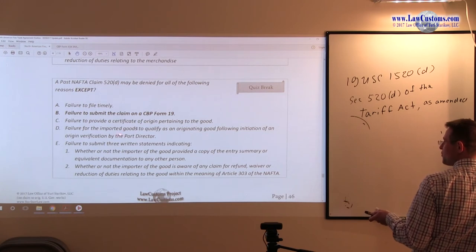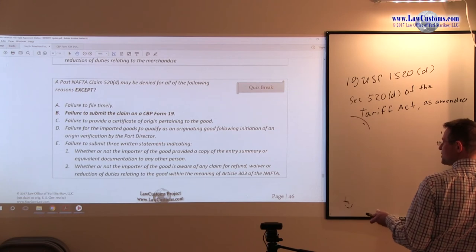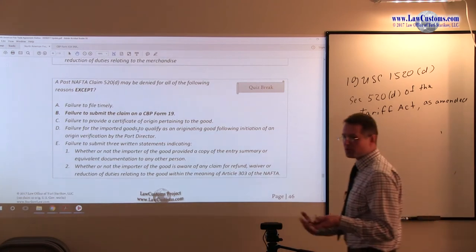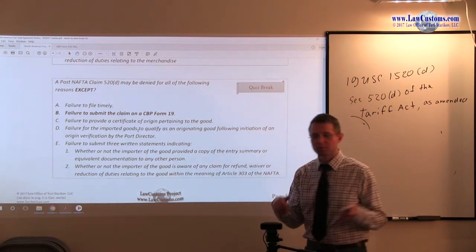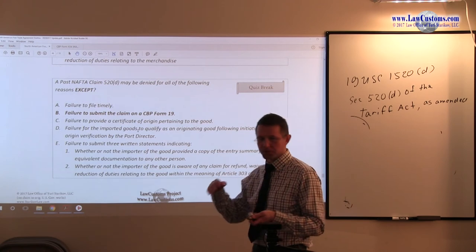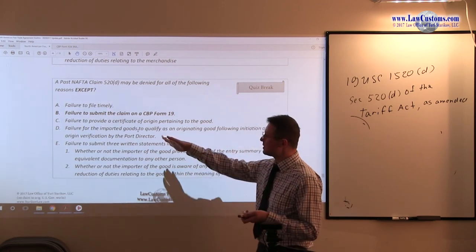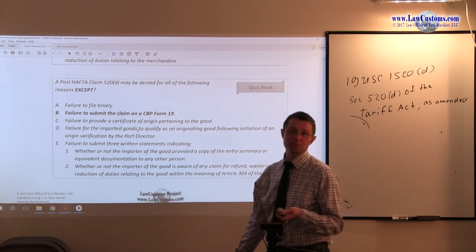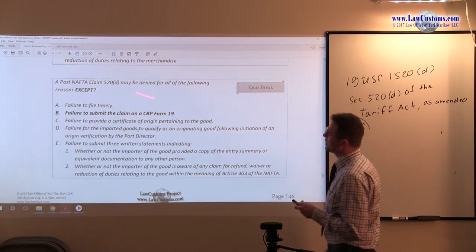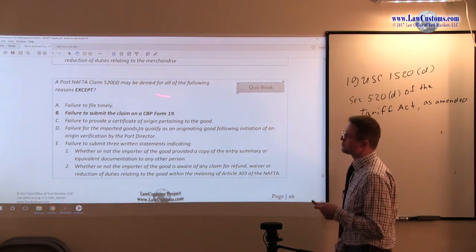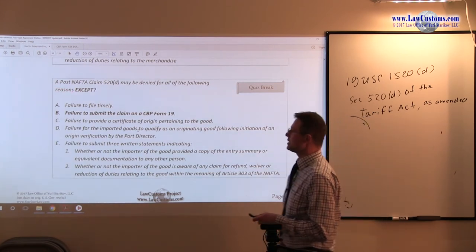Failure for importer goods to qualify as originating good following initiation of origin verification. Well, that's the substantive requirement. If your product doesn't meet tariff shift, if your product does not meet whole obtain or produce criteria, or whatever other criteria, marking criteria, or whatever other criteria that is out there, then if you don't meet the substantive requirement, that's a denial as well. So it is not an exception, if you will. So D is not our choice.